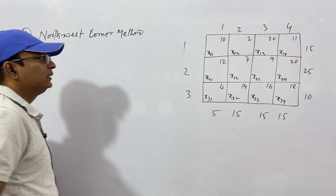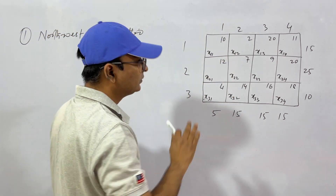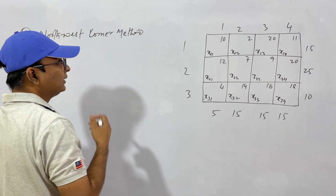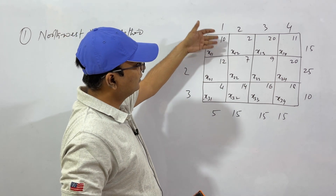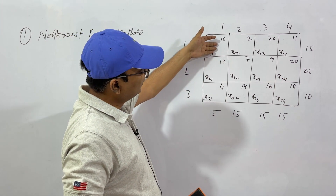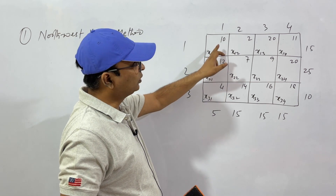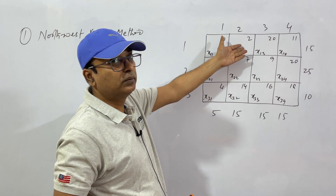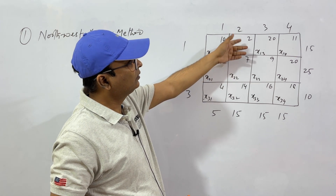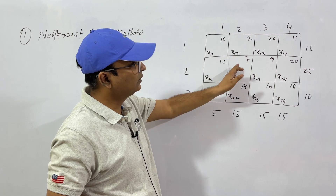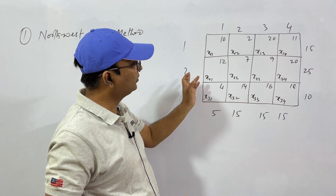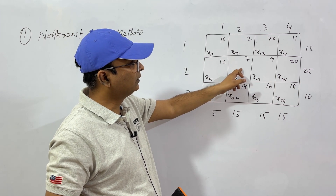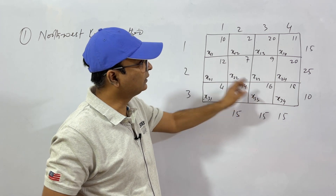The North-West corner means this corner — top-left. This is the North-West corner. What this method does is: it starts with this corner and you allocate the maximum demand possible to it. Then move to the next point. Whatever is left, allocate there. When this supply is over, you turn down. You keep going — this is the method.